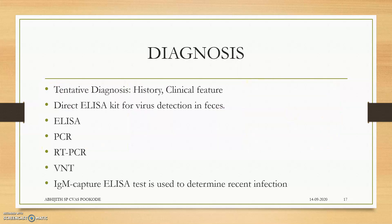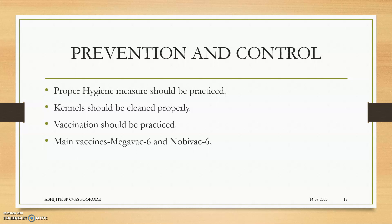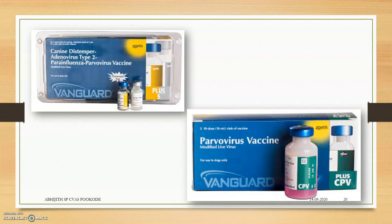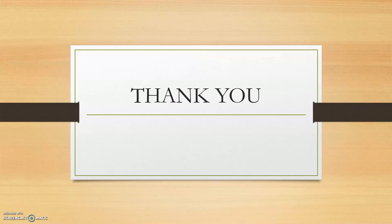For diagnosis, tentative diagnosis is based on history and clinical features. Direct ELISA kits are used for virus detection, along with other microbiological technical tools and immunoglobulin M capture — that is, IgM against parvovirus is captured in the ELISA. For prevention and control, proper hygiene should be practiced, dogs and kennels should be properly cleaned, and vaccination should be practiced. The main vaccines used are Mega vaccines and Nobi vaccines, as well as the Canagen parvo vaccine and Vanguard compound vaccines.